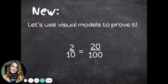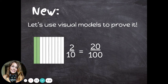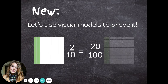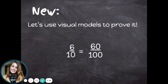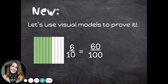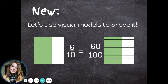Let's use visual models to prove it. We want to prove that two-tenths really is equivalent to twenty-hundredths. Here's a picture of two-tenths — I have a shape divided into ten equal pieces, and two of them are shaded in. Here's twenty-hundredths: the same shape is divided into one hundred equal pieces, and twenty of them are shaded. Even though the hundredths has smaller pieces, we can see that the same amount of the whole is shaded for both. Let's look at six-tenths and sixty-hundredths. The size of the pieces is different, but the same amount of the whole shape is shaded for both. They are equivalent.